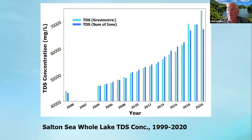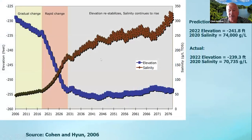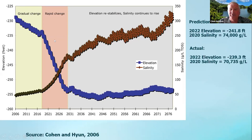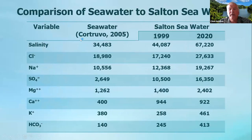In 2006, Michael and the Pacific Institute published something called Hazard, which showed what might happen to the sea in the absence of any restoration efforts. The actual sea elevation is just a few feet better than the prediction, and salinity is just about right on track — we're still in the early parts of the expected changes, so it could get much worse very quickly. Comparing Salton Sea water to seawater: seawater is 34,000 mg/L. In 1999, the Salton Sea was at 44,000; now it's at 67,000 from the sum of ions.